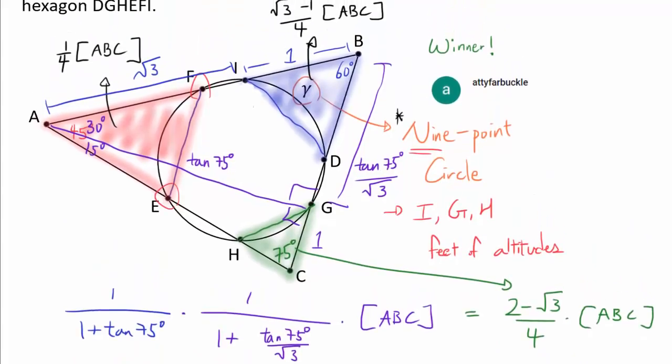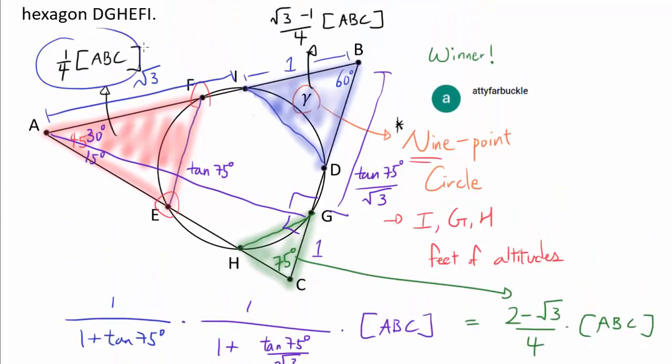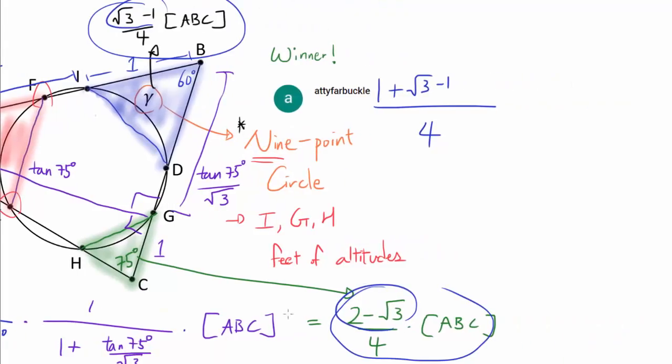We are now a few steps away from the finish line. So we have to add up 1/4 ABC, (square root of 3 minus 1) over 4 ABC, and (2 minus square root of 3) over 4 ABC. And that's 1/4, we have 1 plus square root of 3 minus 1.